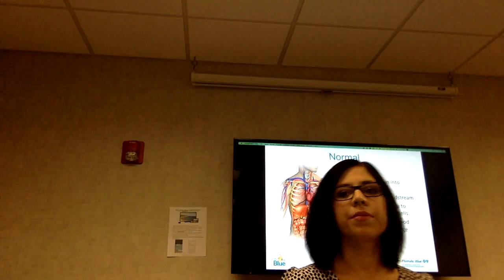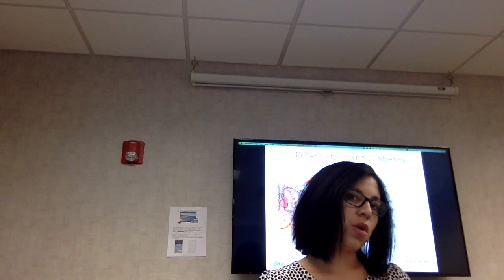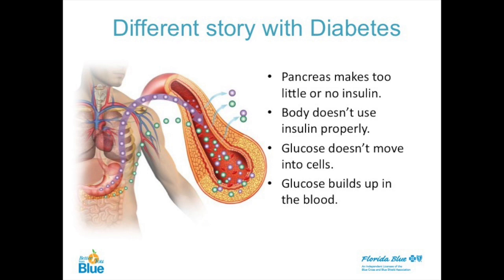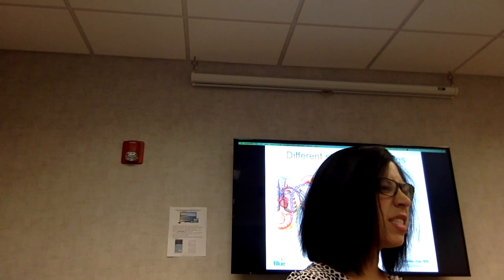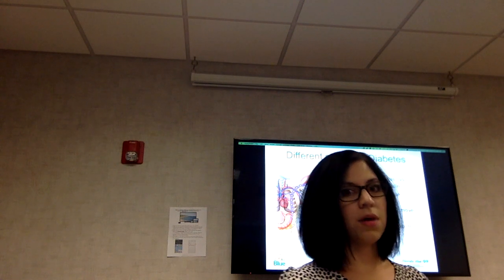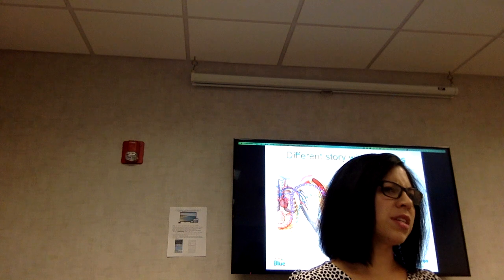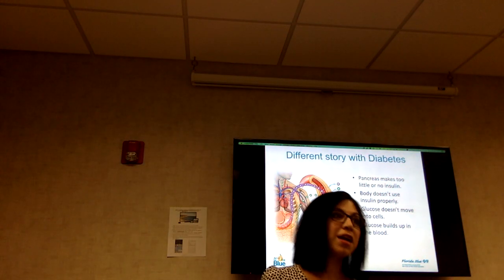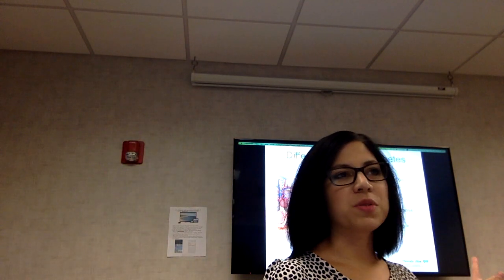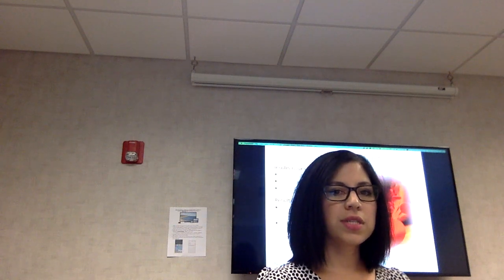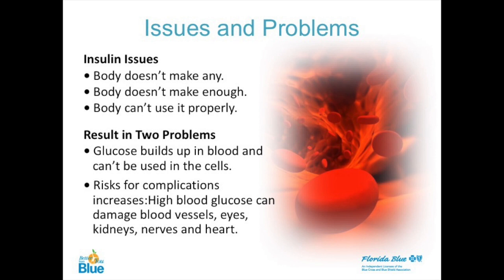With diabetes, the pancreas either makes too much, too little, or no insulin, or it doesn't properly use the sugar we put in. The sugar gets filtered through the pancreas, which is supposed to process and move it into our cells. If we don't utilize that sugar, it starts storing as fat, triglycerides, and cholesterol. That's why doctors sometimes say that losing weight might help you get off medications or even reverse diabetes.